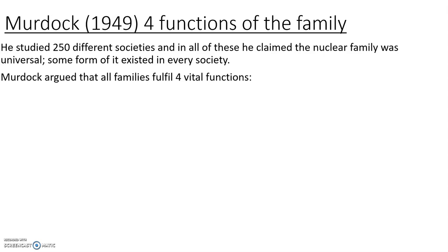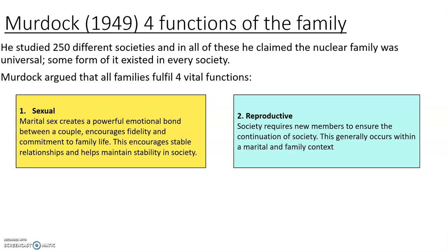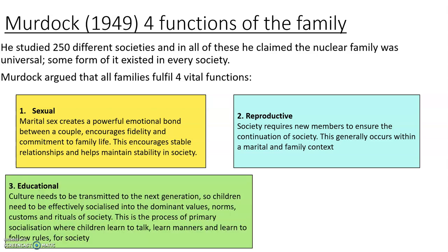Murdoch argued that families do four vital things. The first is sexual - giving children good role models in terms of relationships. Having a relationship creates a strong emotional bond between a couple, encouraging stable relationships in the future. Reproductive is about having the next generation - families provide that. Educational is about sharing norms and values, teaching children what they need to succeed in society, whether that's walking, talking, or following rules.